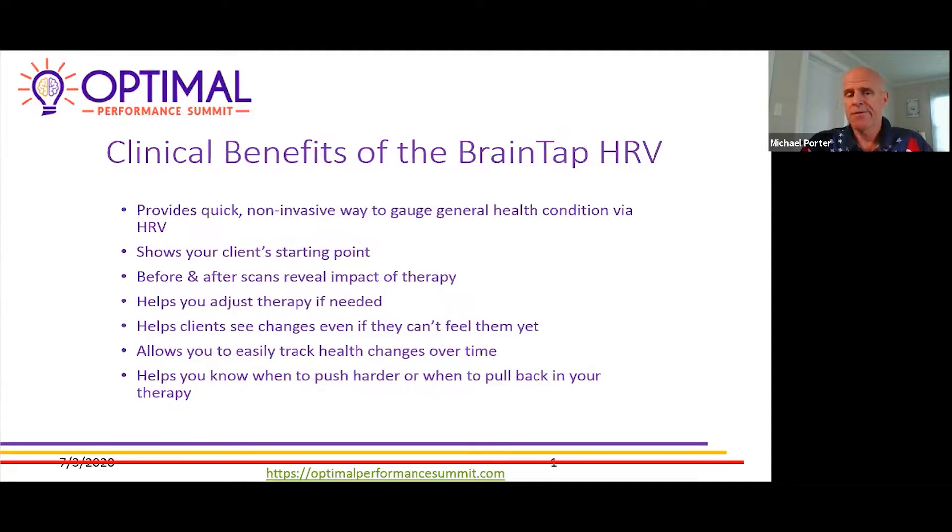For us, people would say my pain's gone, they thought they were better, they would leave. So now we can say, great, your pain's gone, but your stress has moved down 100 points but is still 200 points above where it should be. Your nervous system's not quite balanced, we need to get it balanced. Your energy's not quite where it needs to be. The good thing is when people don't think anything's happening, the BrainTap HRV can show them what you're doing and what's happening.